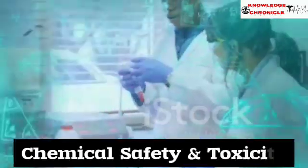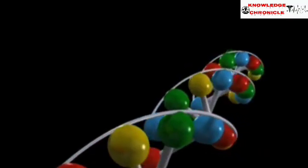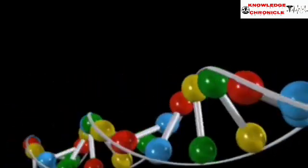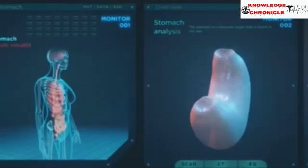Ever wondered how we test if a new chemical or drug is toxic? This is called toxicity testing, and transgenic animals are proving to be game changers here too. Scientists engineer animals with sensitive genes that react more strongly to toxic substances. These reactions give early warning signs of harmful chemicals, and testing can be done much quicker than with regular animals.